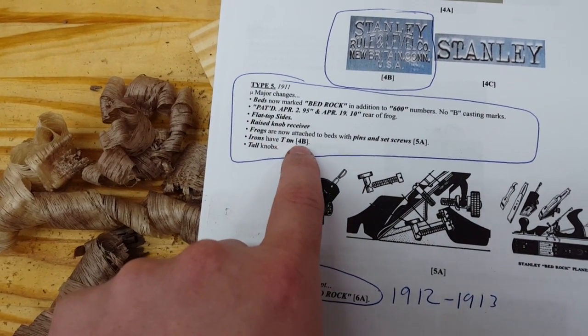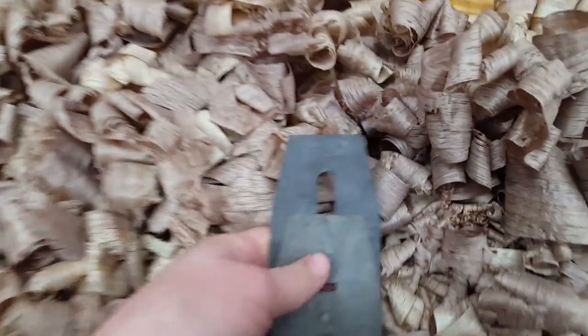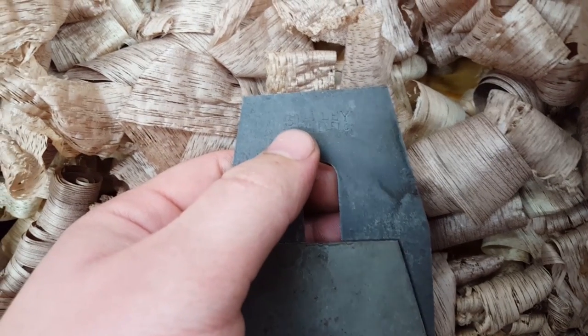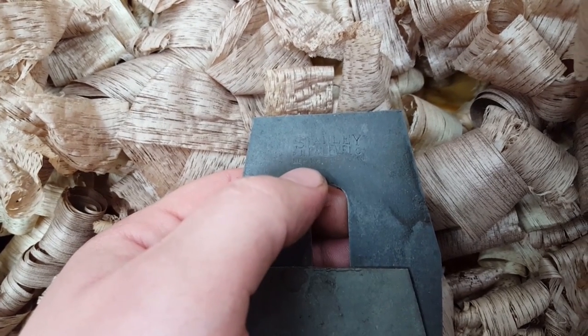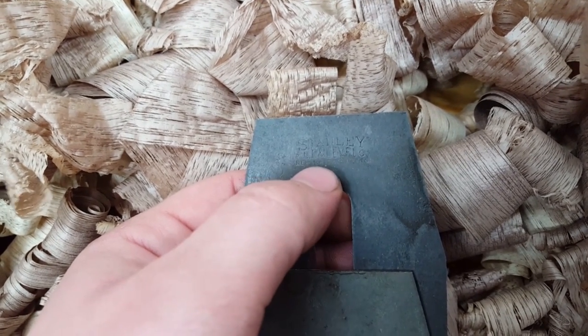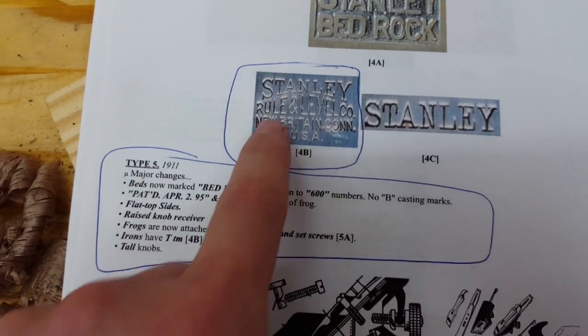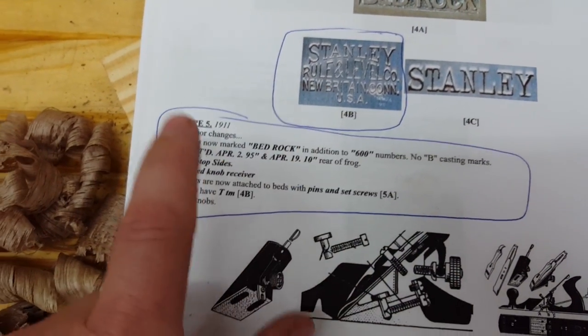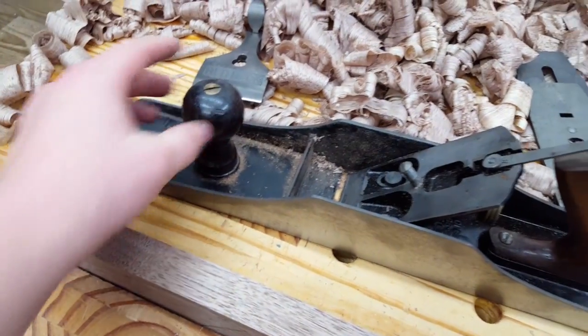The irons have TM which is 4b in this diagram, so the irons should have this, which this one does. On this side, I don't know if I can get the light to show the right way, but it does say Stanley Rule and Level Company and it says New Britain and then the rest is gone, but it should say New Britain, Connecticut, USA. So this is the appropriate iron for this model, this type type 5. And then tall knobs - this knob does feel awfully tall to me.